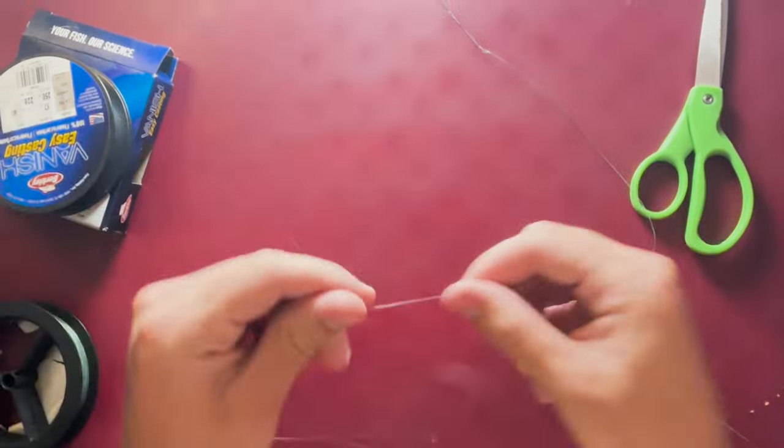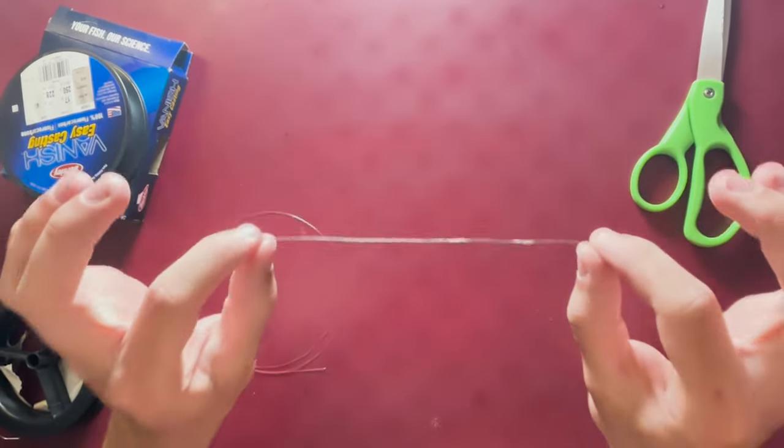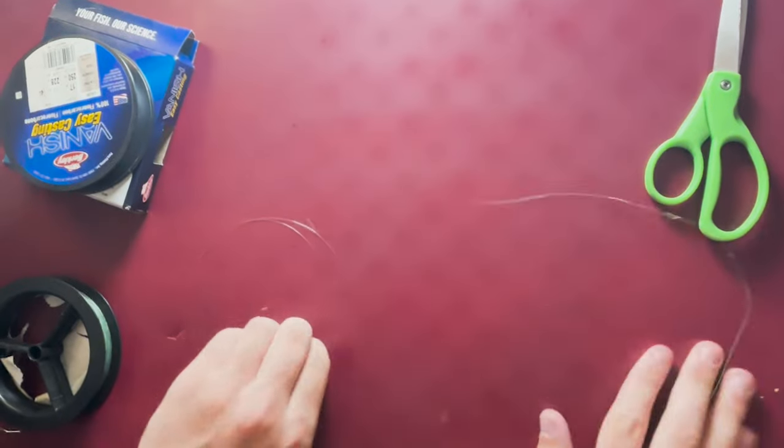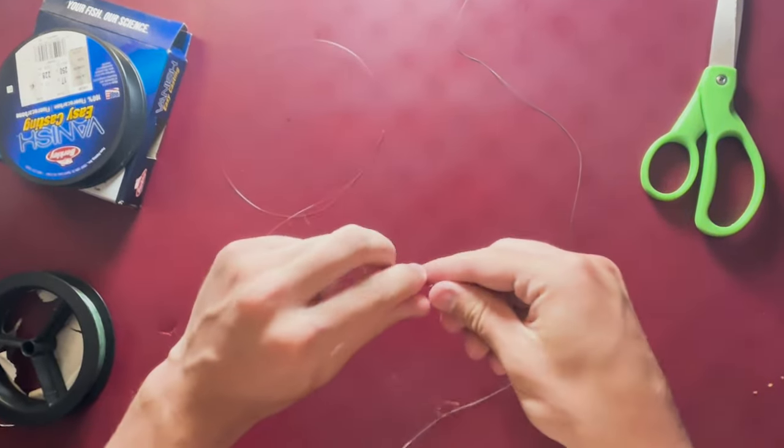Once you have your two lines—this is going to be your leader line in this case and this is going to be your main line—you want to take your leader line, which here is this clear fluorocarbon, and you're going to make a little loop.